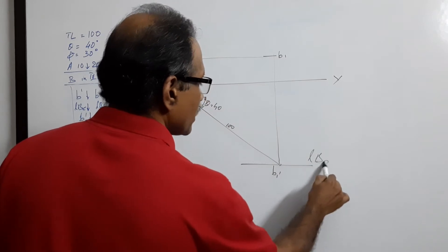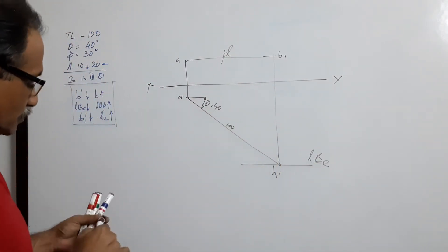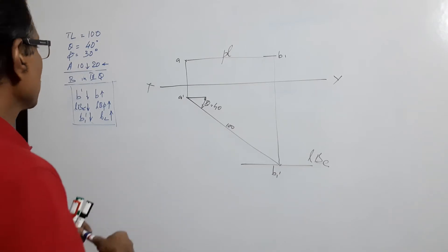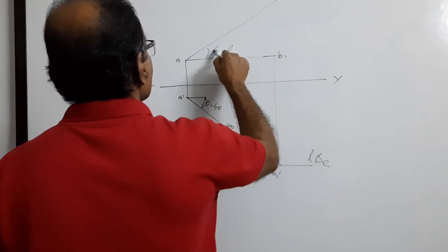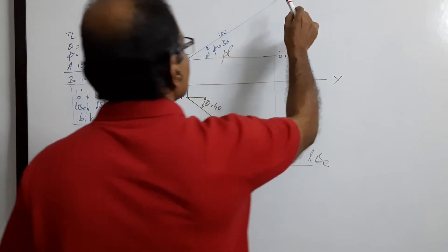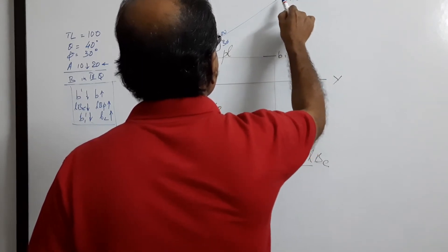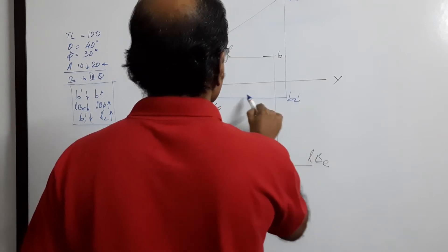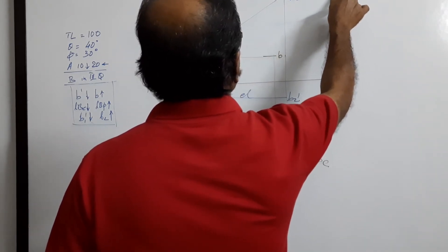LB is the plan length. Next, at A, draw a line at 30 degrees — angle 5 equals 30, length 100. Mark b2. b2-dash gives the elevation length LBP.